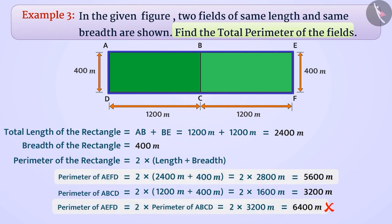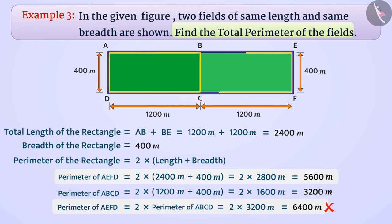Can you explain why? Think for a while. The reason is that in this case we have added all the sides of both rectangles, unknowingly adding side BC twice. Since side BC is not at the boundary of the bigger rectangle, it is wrong to include it when finding the perimeter. You must avoid such mistakes.